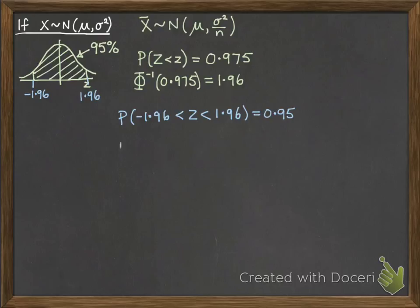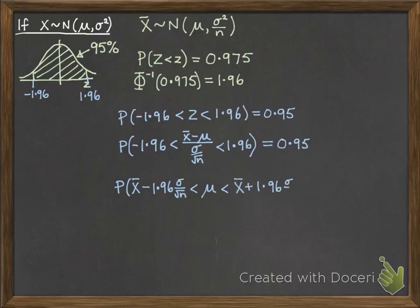How do we translate this into x values? We use our normal way that we standardize x into z, but backwards. So z equals x̄ minus μ over σ over root n. Then rearrange that so we've just got μ in the middle. We'll multiply by σ over root n and then subtract or add that from x̄ according to whether we need -1.96 or 1.96.